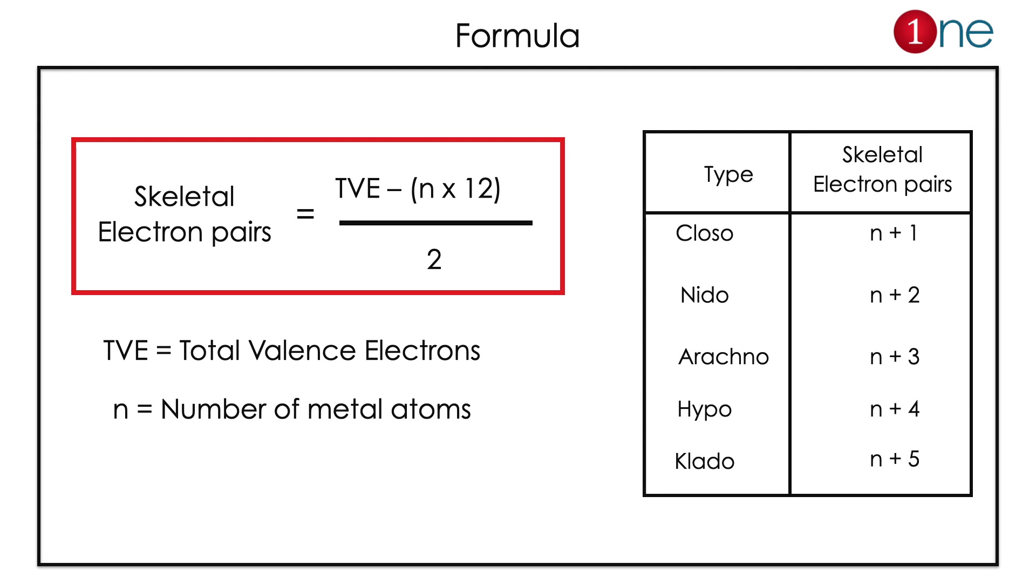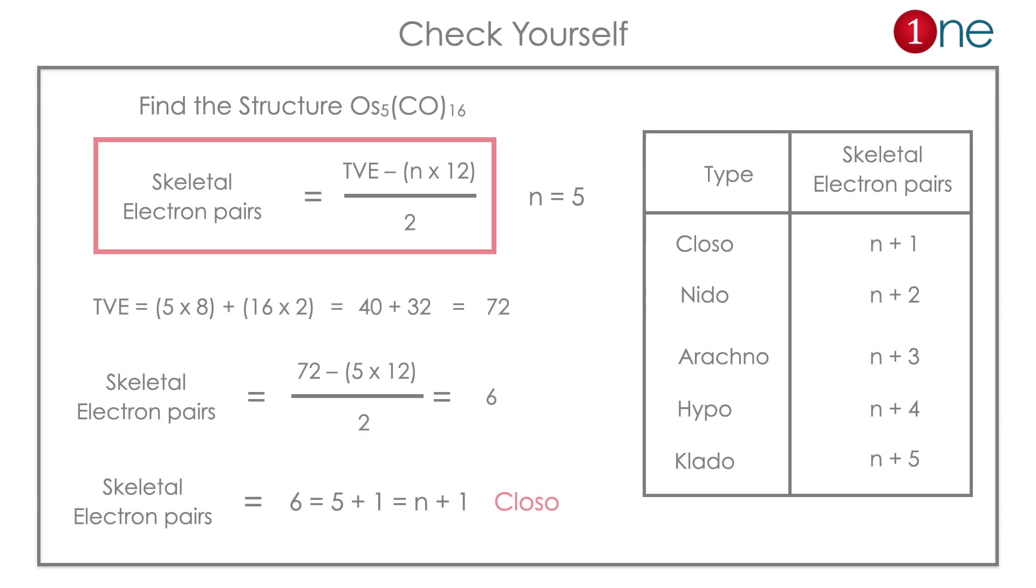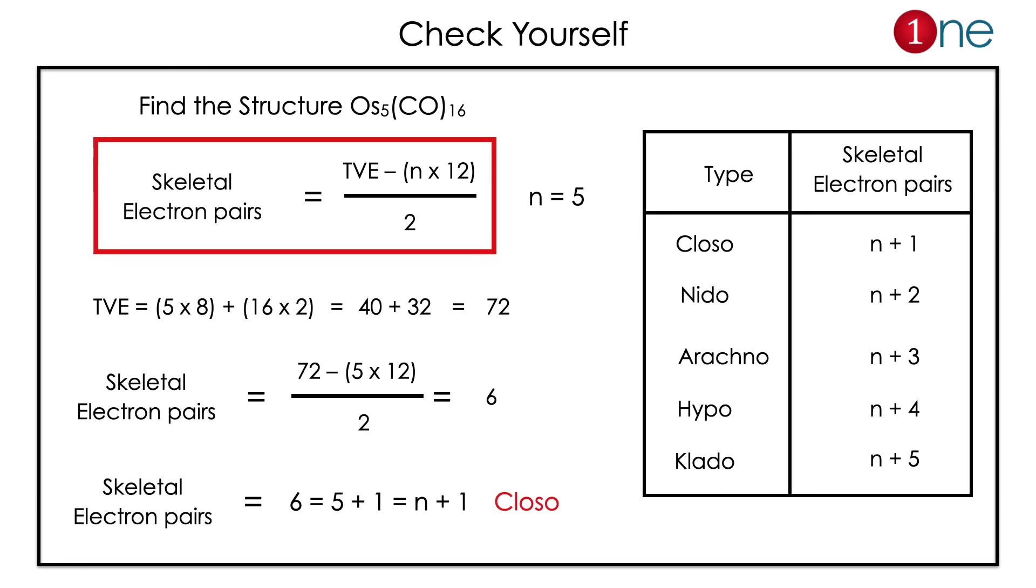Here I give an example to practice yourself: Os5(CO)16, it's osmium carbonyl compound. Multiple metal-metal bonds are there. If you calculate skeletal electron pairs, total valence electrons are 5 metal atoms and 16 ligand CO, so 40 plus 32 is 72.